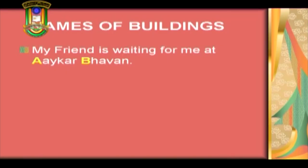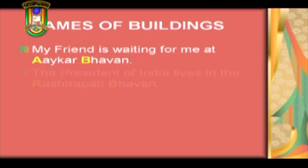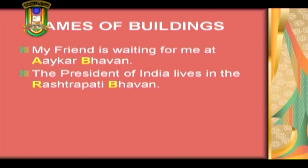Apart from this, a capital letter is also used to indicate names of buildings. If I were to say 'my friend is waiting for me at Akar Bhavan', I would capitalize A and B. Or: the President of India lives in the Rashtrapati Bhavan. Akar Bhavan and Rashtrapati Bhavan are names of buildings and therefore need to be capitalized. You could be talking about Gagan Vihar — 'yesterday I was at Gagan Vihar', capitalizing G and V — or 'my friend stays near Gharunda Apartments', capitalizing G and A.